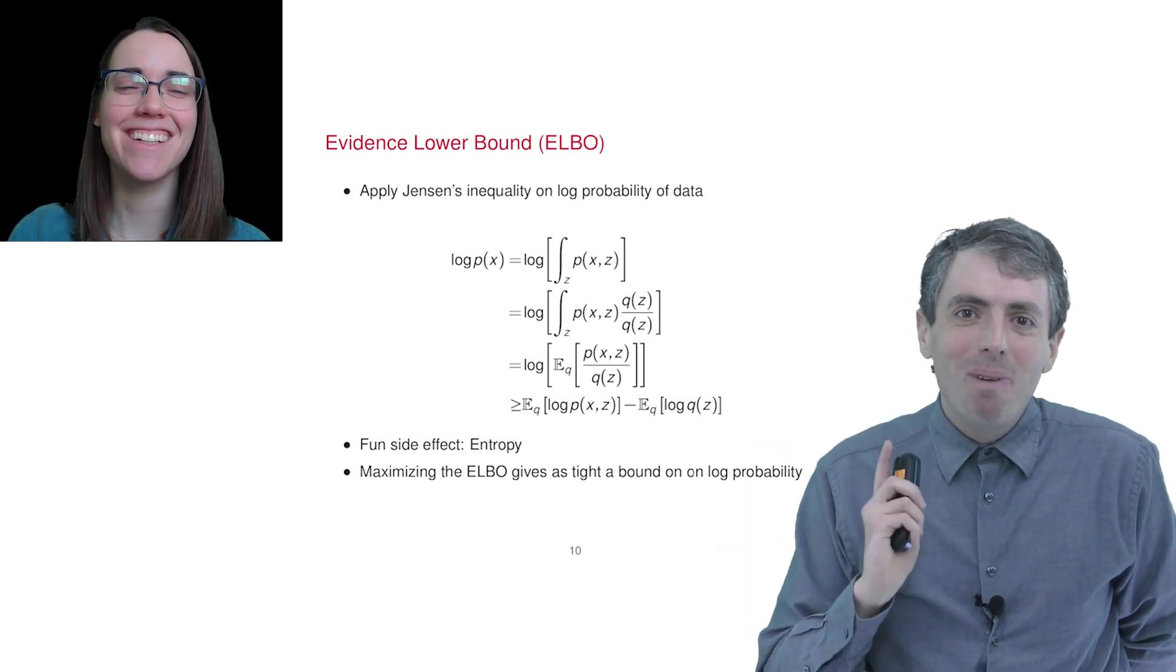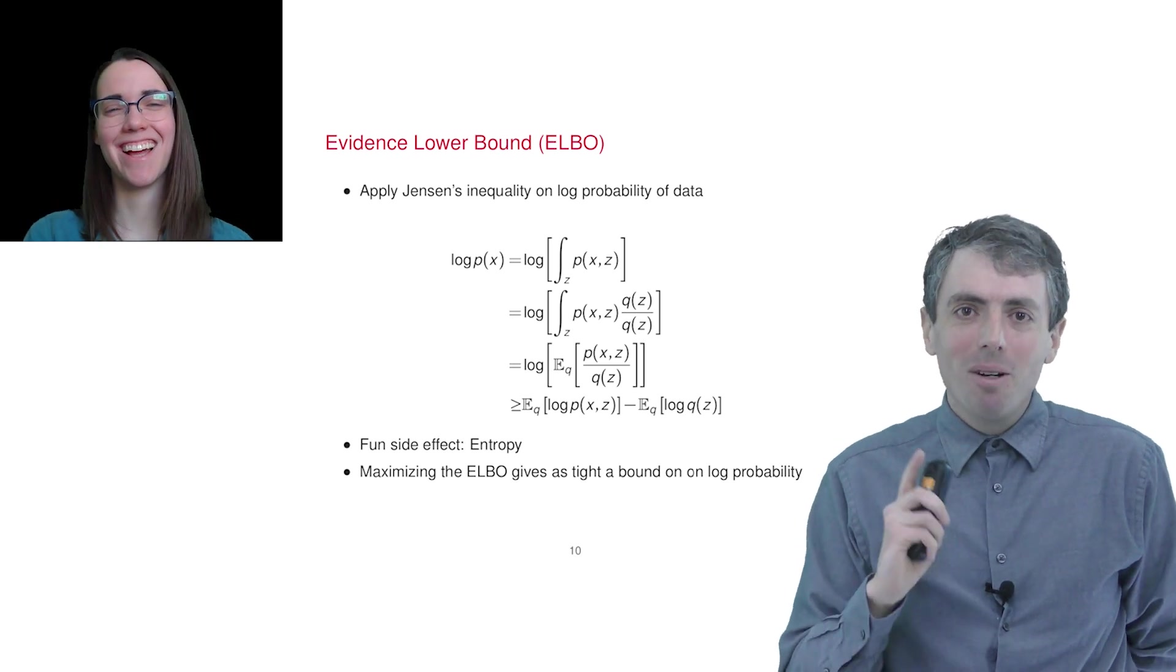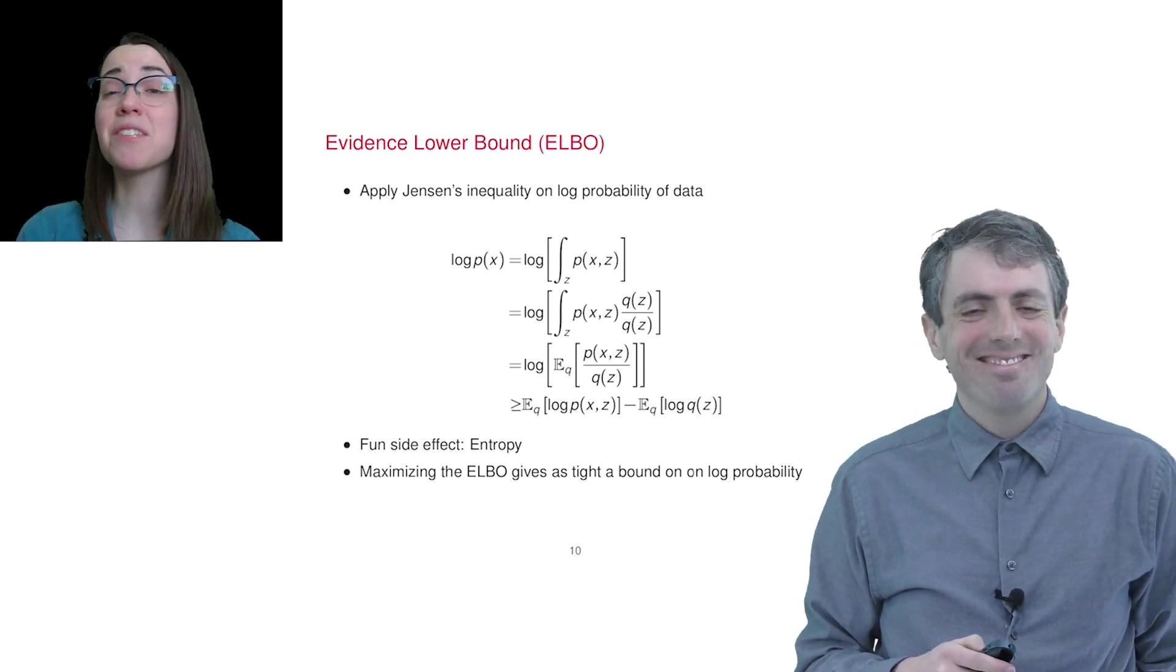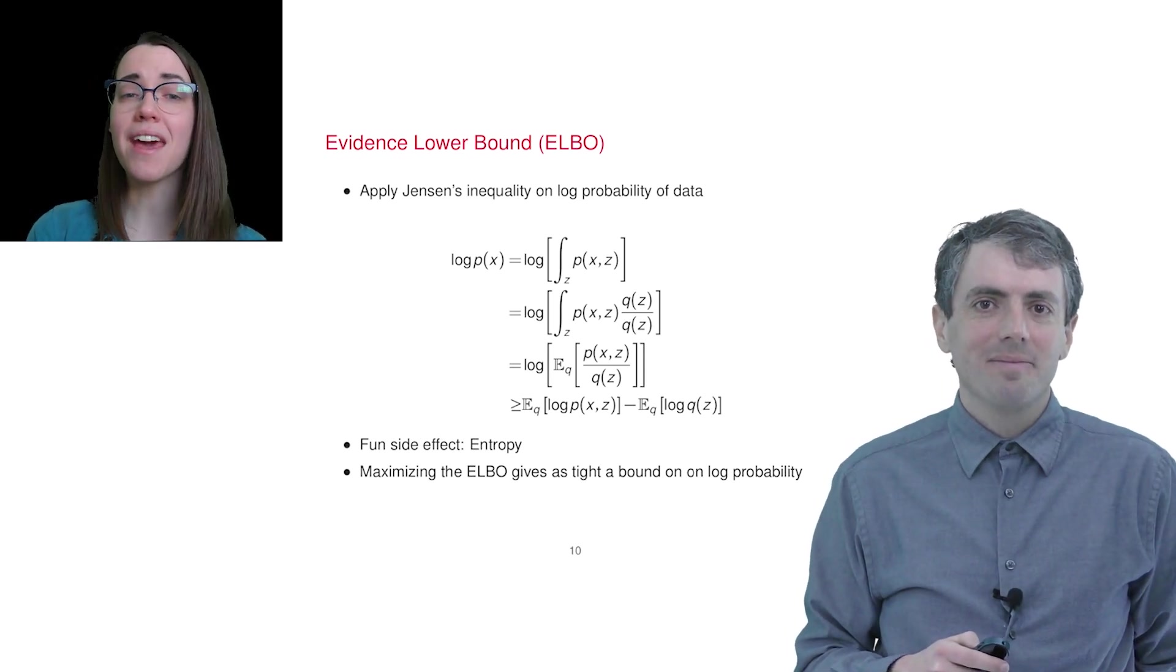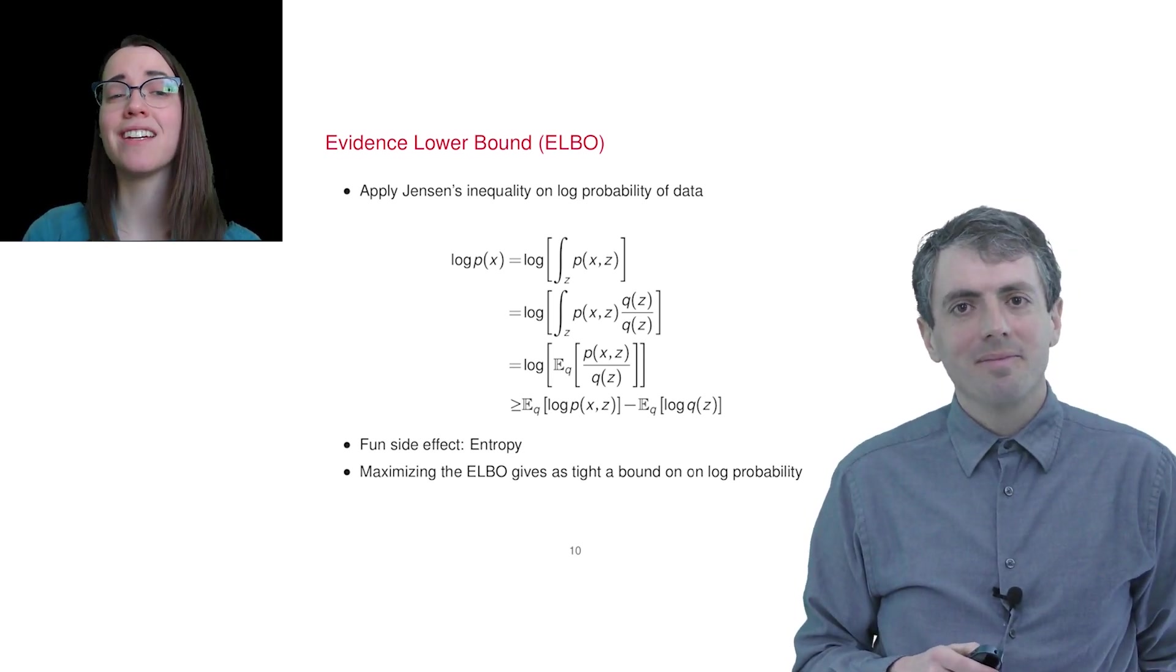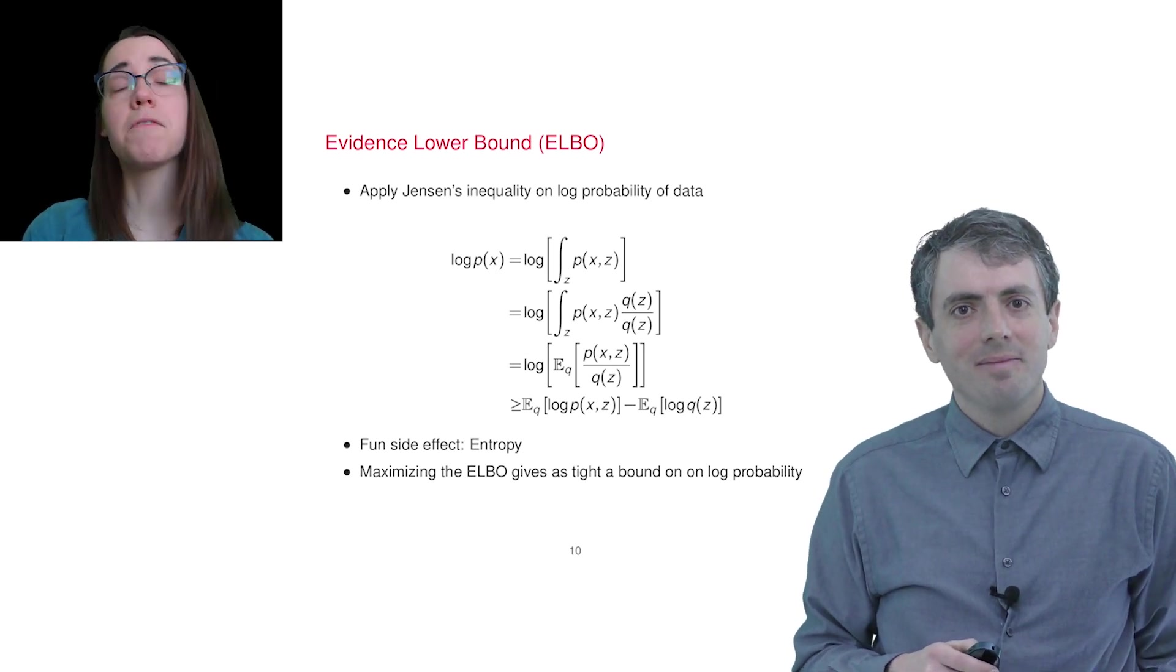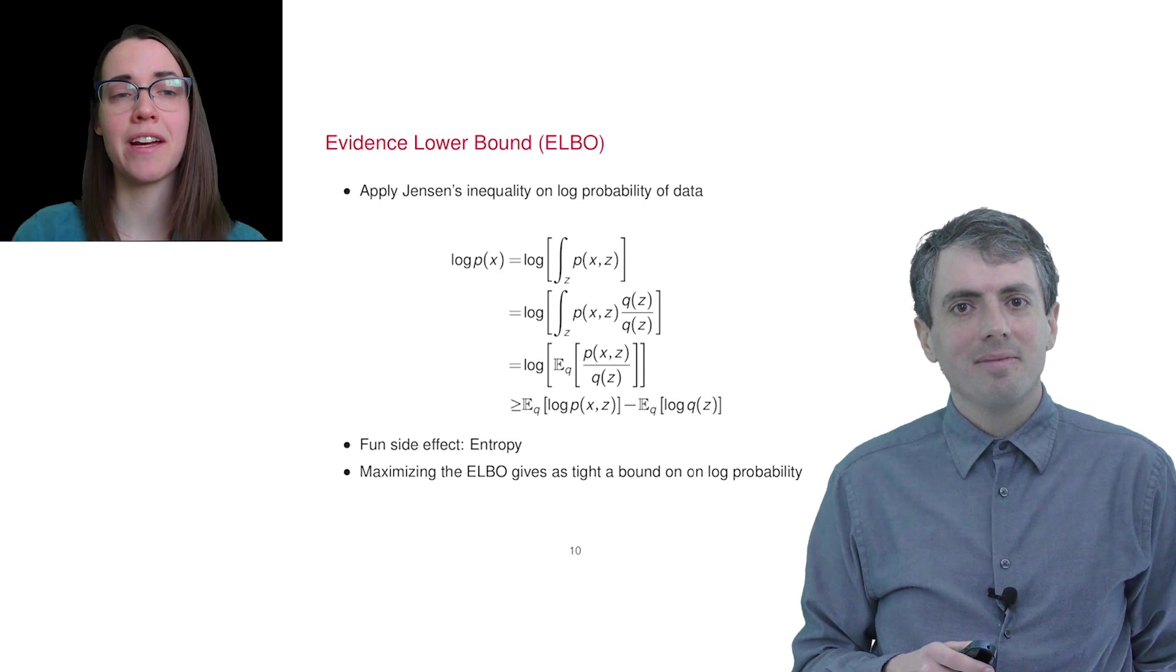But if we maximize this, we're maximizing the log probability. Exactly. That's really the whole point of variational inference. We can't maximize the true likelihood directly, so we're optimizing this friendlier expression instead. Of course, this is one way of deriving the variational objective. Let's look at another way of defining the variational objective.